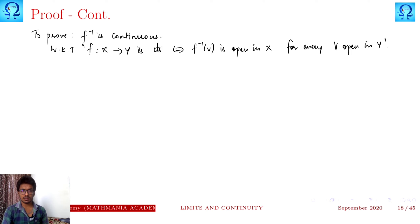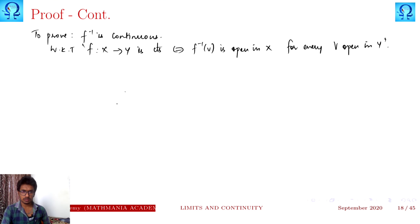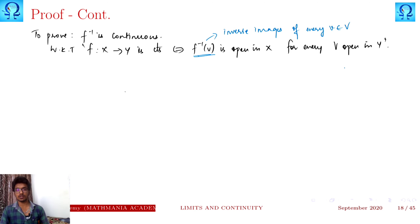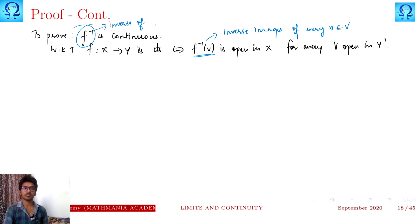To prove f inverse is continuous, we are going to make use of the topological definition of continuity — that is, a function f from X to Y is continuous if and only if f inverse of V is open in X for every V open in Y.